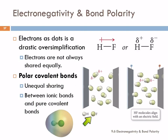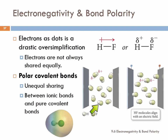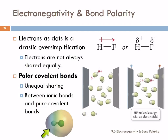We can observe that this is so by putting molecules in an electric field. What we observe is that hydrogen fluoride molecules will line up with an electric field. If the electrons were shared equally, we would not expect that to happen. Here, with no electric field, they're oriented randomly. In an electric field, we see that they line up.